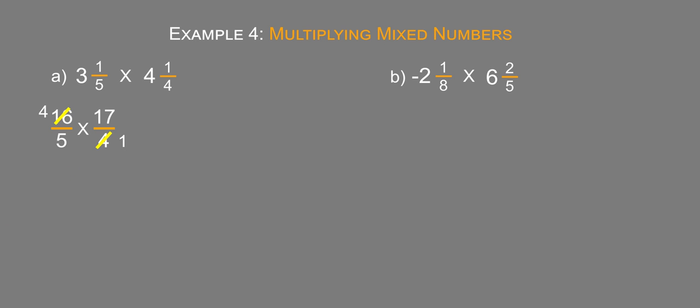That's going to make this problem a little simpler because now we're going to have four times 17 over five times one. And four times 17 is a little bit easier than 16 times 17. So this helps us out quite a bit.